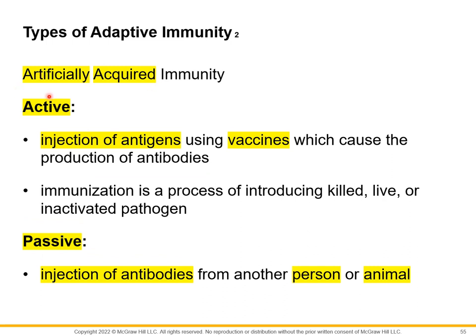Up next is artificially acquired immunity. In this case, the acquisition of antigens or antibodies is done intentionally — unlike naturally acquired immunity where exposure happens without intent.